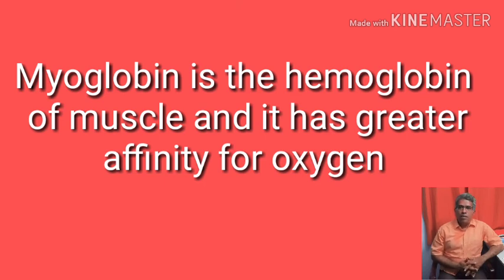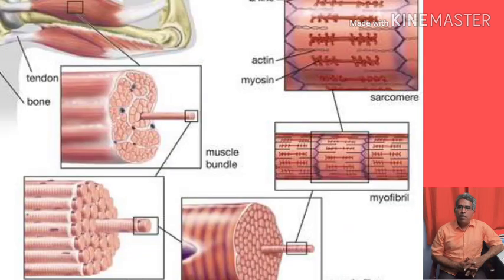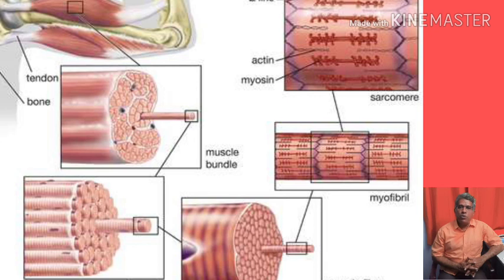To summarize: study of muscles is called myology or sarcology; study of muscle movement is called kinesiology. Forty to fifty percent of body weight is made up of muscles. There are three types of muscles: skeletal, smooth, and cardiac. Skeletal muscles are attached to bones, also called striped or voluntary muscles. Muscle contains structural proteins — actin and myosin — and regulatory proteins — tropomyosin and troponin. Actin active sites are normally masked by tropomyosin and troponin, and calcium ions are required for muscle contraction. Thank you very much.